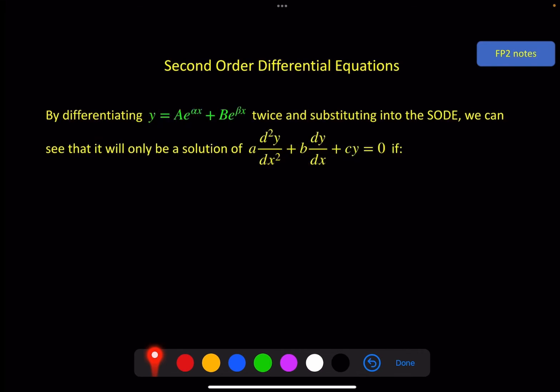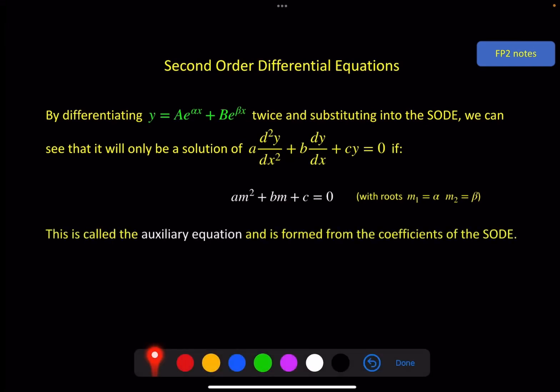A and B will then be the constants for a particular solution that you'll need boundary conditions to solve for. So to summarize, by differentiating this twice and substituting it into the second order differential equation, we can see that it will be a solution but only if am² + bm + c = 0, where one of the solutions is α and one is β.